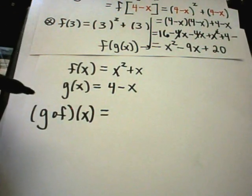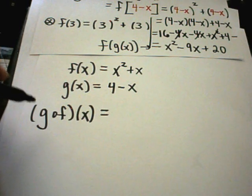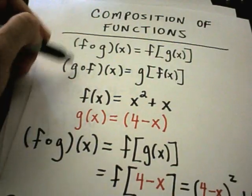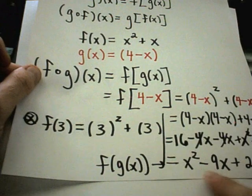Recall with multiplication, the order doesn't matter—2 times 3 is the same as 3 times 2. This notation almost looks like multiplication but it's not, so you have to be careful because in general you don't get the same thing. Notice I found f of g of x to be this stuff.